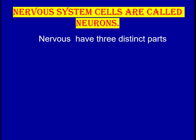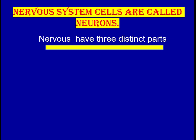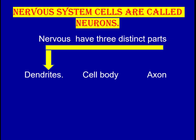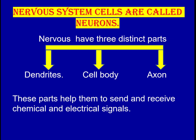Neurons have three distinct parts: the dendrite, the cell body, and the axon. These parts help them to send and receive chemical and electrical signals.